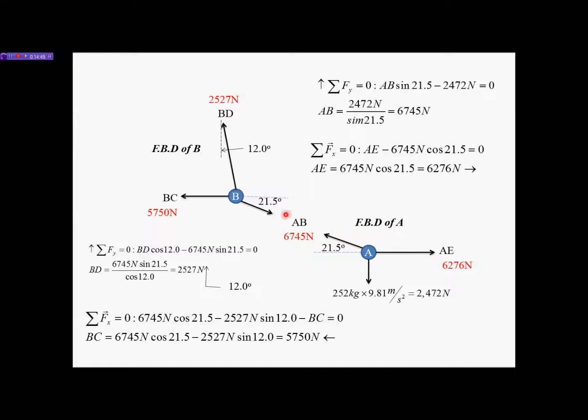All five cable forces are now solved: AB = 6745 N, AE = 6276 N, BD = 2527 N, BC = 5750 N, and the fifth force is determined. That's all there is to solving an equilibrium problem such as this. I hope this presentation helps with your understanding of the material. Thank you very much, have a nice day.